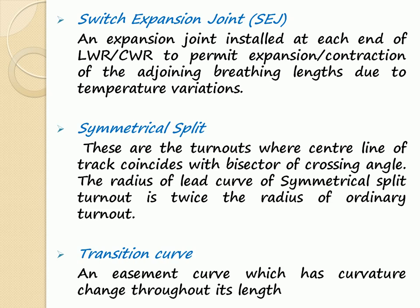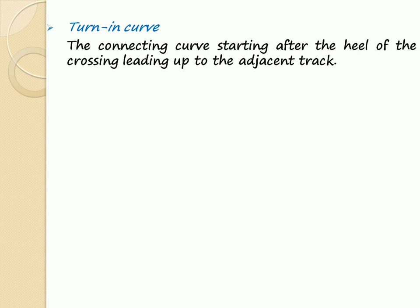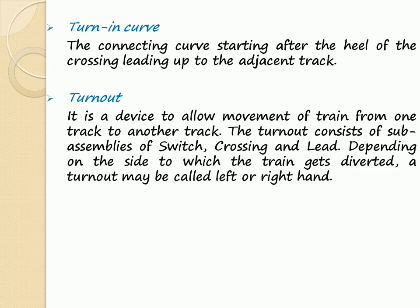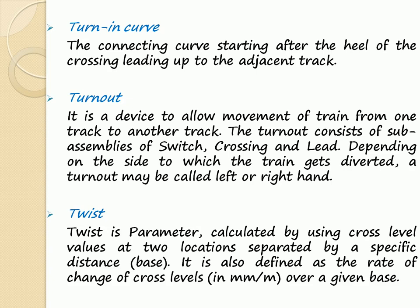Transition Curve: An easement curve which has curvature changing throughout its length. Turn-In Curve: The connecting curve starting after the heel of the crossing, leading up to the direction of the through track. Turnout: It is a device to allow movement of a train from one track to another. The turnout consists of sub-assemblies of switch, crossing, and lead. Depending on the side to which the train gets diverted, a turnout may be called a left-hand or right-hand turnout. Twist: A parameter calculated using cross-level values at two locations separated by a specific distance; also defined as the rate of change of cross-level over a given base.